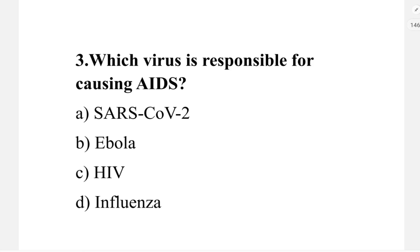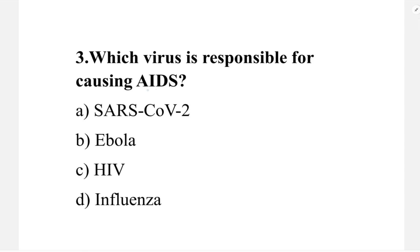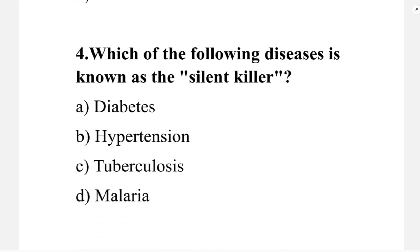Which virus is responsible for causing AIDS? Option A: SARS-CoV-2. Option B: Ebola. Option C: HIV. Option D: influenza. The correct answer is option C, HIV. AIDS is caused by the HIV virus.